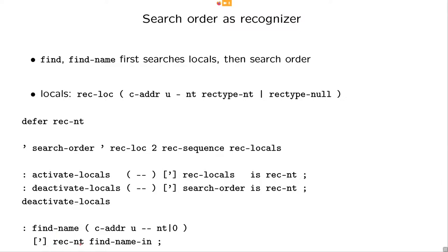And find-name now is just, we have this rec-NT thing, which is a deferred word, so we use this transparent part and call find-name-in.